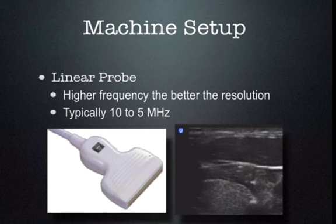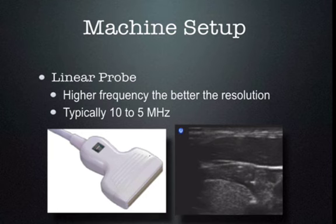To set up your machine correctly, you need to use a linear probe. Linear probes are high frequency and give very detailed resolution — the best resolution probe we have. They're typically from 10 to 5 megahertz or even up to 12 to 14 megahertz. The higher the megahertz, the better the picture. However, if you only have a 10 megahertz probe, this is quite adequate.